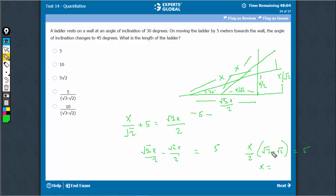x is equal to 10 upon root 3 minus root 2. That would be the value of x.